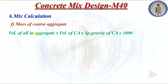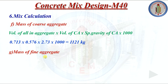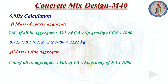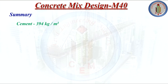Mass of coarse aggregate = volume of all-in aggregate × volume fraction of coarse aggregate × specific gravity of coarse aggregate × 1000 = 0.713 × 0.576 × 2.73 × 1000 = 1121 kg. Mass of fine aggregate = 0.713 × 0.424 × 2.46 × 1000 = 744 kg.